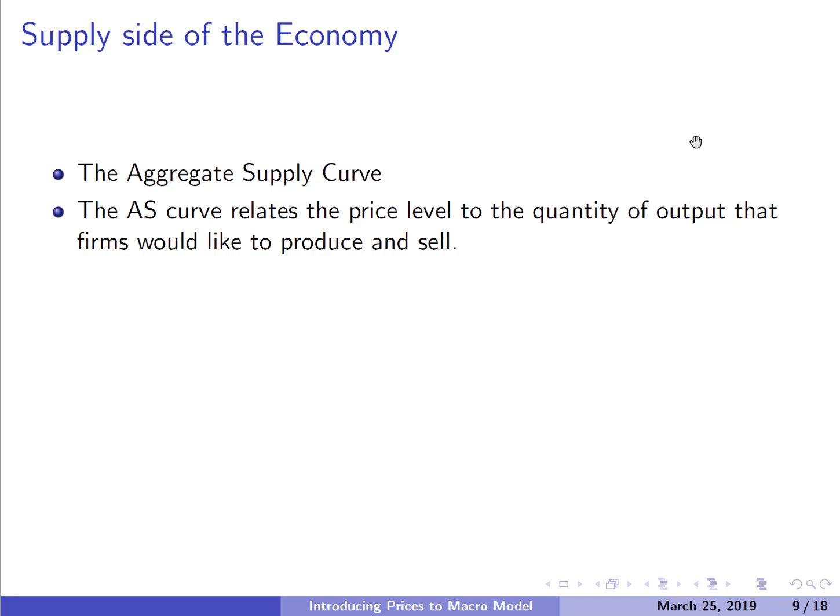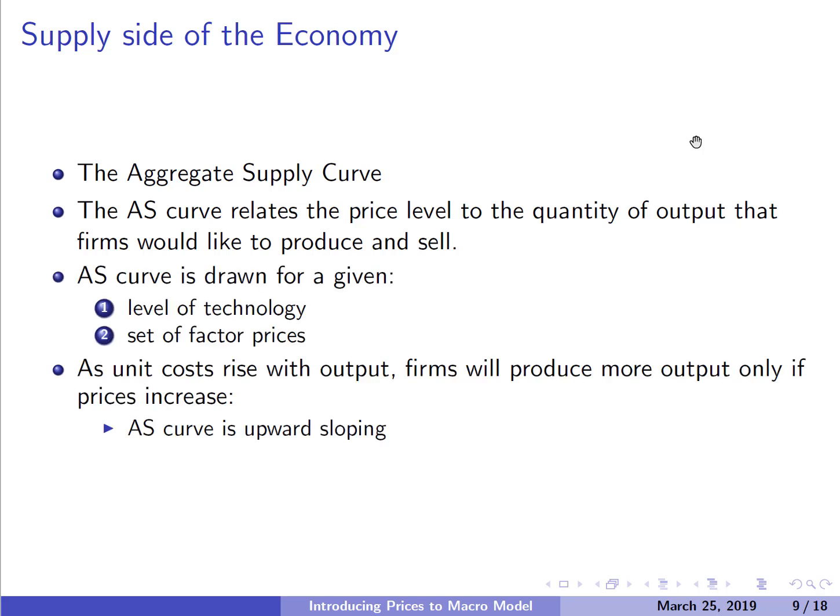Now let's turn our attention to the supply side of the economy. We've just finished talking about the aggregate demand curve, and now we're going to talk about the aggregate supply curve — the AS curve. This is the supply curve for the entire economy, relating the price level P to the quantity of output that firms would like to produce and sell. This curve is drawn given some set of factor prices and some level of technology. Factor prices are input prices — think of the price of labor or the price of oil.